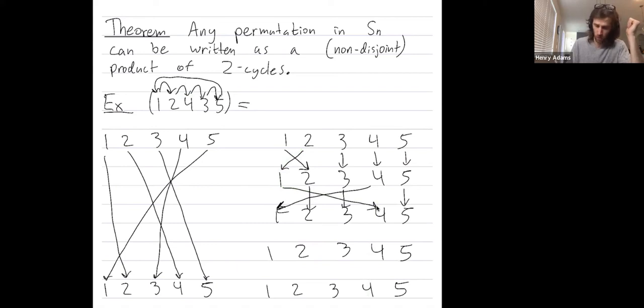First we swapped 1 and 2. Next we swapped 1 and 4. Who's currently in position 1? 4 just got mapped to position 1. Now we're going to send 4 to its final resting spot, which is 3. So I'm going to swap 1 and 3.